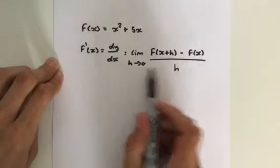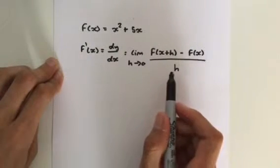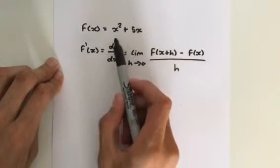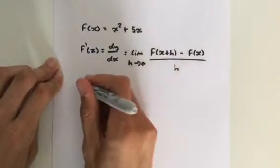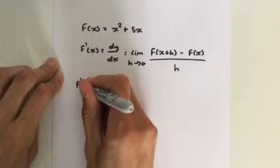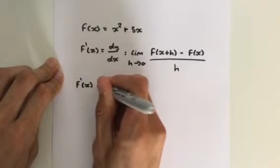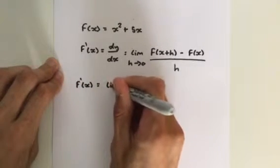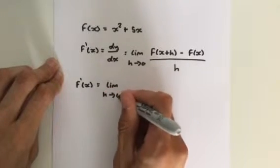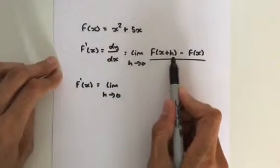Okay, so you should try and commit this to memory because it would be very important in an exam. So let's go and differentiate this function. We get that f' of x is going to equal the limit as h approaches 0 of f of x plus h.